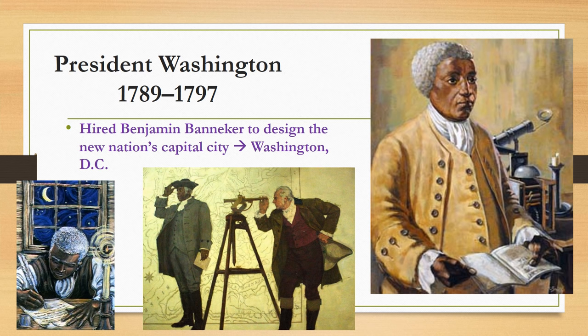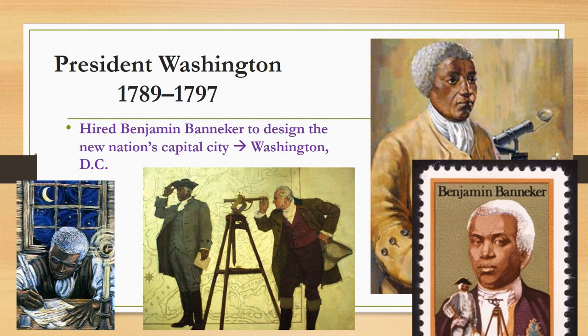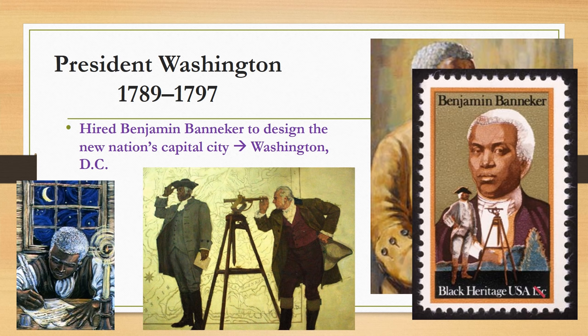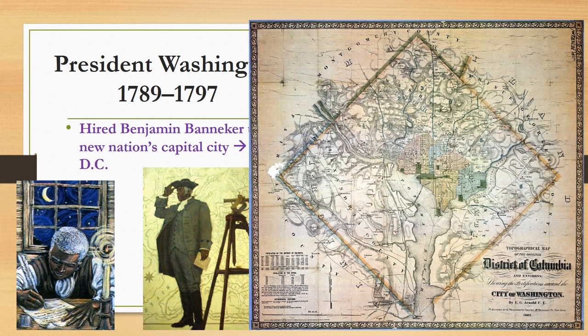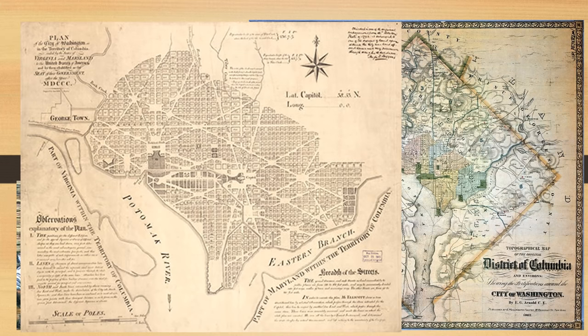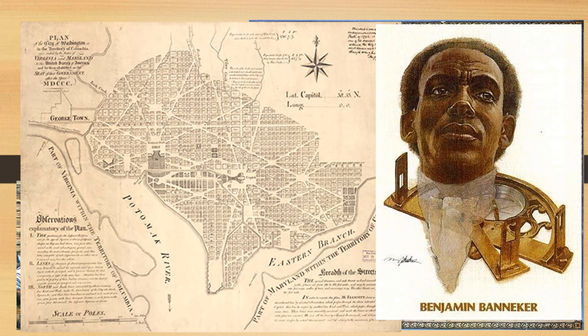President Washington also hired a very crucial person to the planning of Washington DC as our nation's capital. His name was Benjamin Banneker — an African American man who was trained as a surveyor and scientist. Washington asked him to design the new nation's capital city, and many primary sources are plans drawn from the survey records obtained from Benjamin Banneker, an important person in our nation's capital's history.